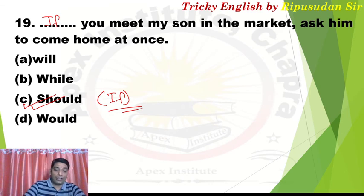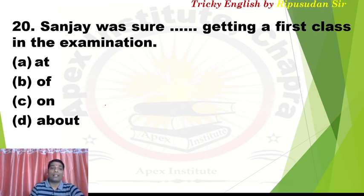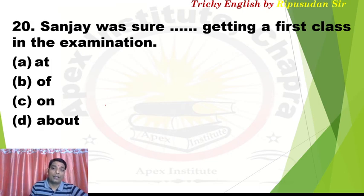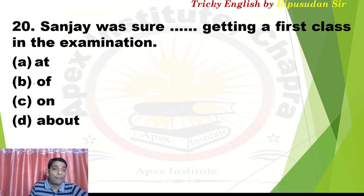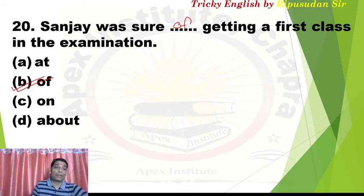'Should' is being used in the sense of 'if' — it is working as a conjunction here. Question 20: 'Sanjay was sure that's getting a first class in the examination.' Sanjay was sure he would get first class. The fixed preposition after 'sure' is 'of' — 'sure of getting something'. So we use 'of'. Remember: after 'sure', always use 'of'.